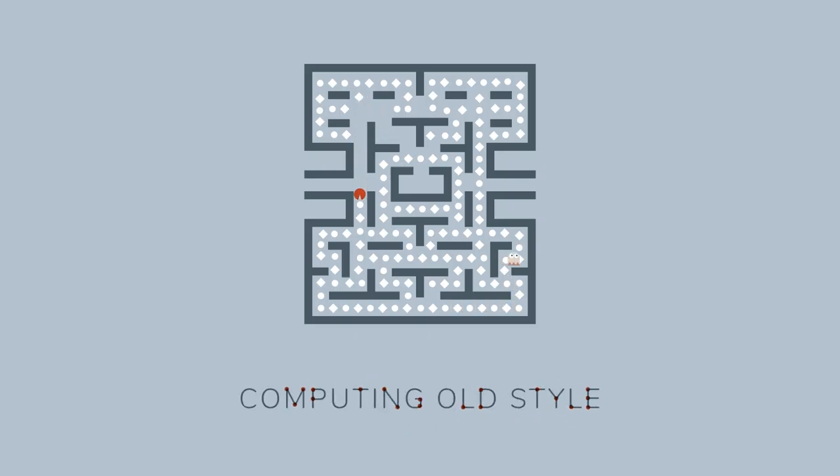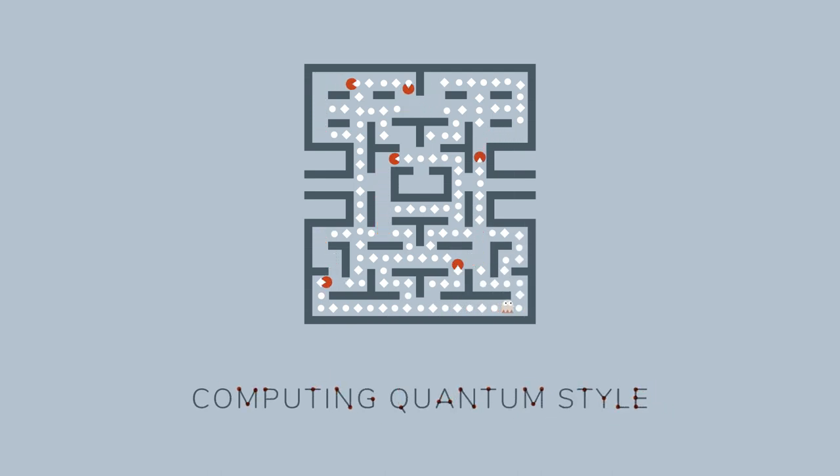Quantum computers operate with qubits instead of bits. Qubits can have two states simultaneously. Instead of either having the value 1 or 0, a qubit can be 1 and 0 at the same time. Exactly!